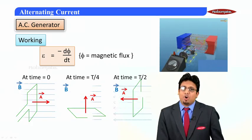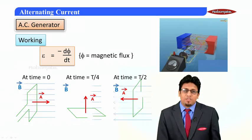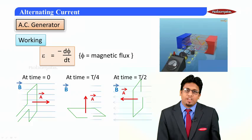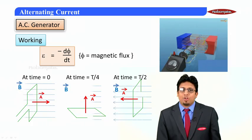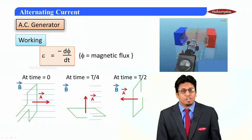As the coil rotates in the following manner, the magnetic field and the area vector become parallel, and therefore the flux through the coil becomes positive.